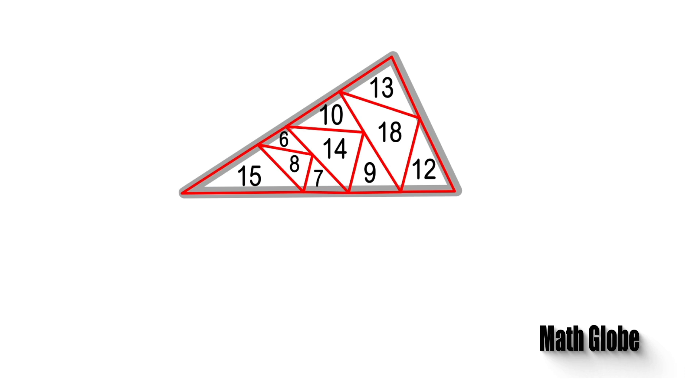Now we translated them into the one triangle that we will calculate its perimeter. Then let's name the lengths of the line segments using letters ABC and so on.